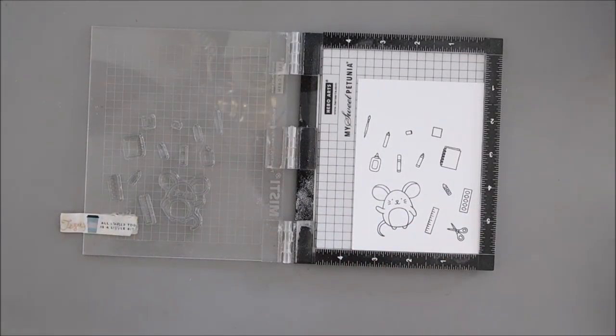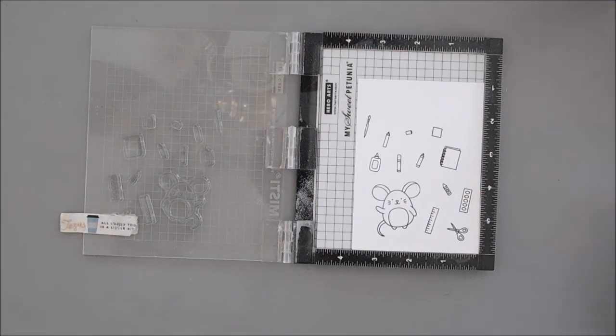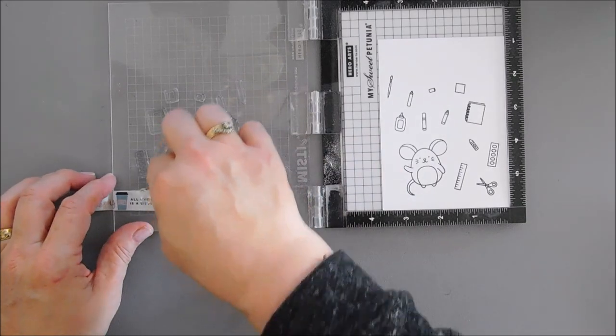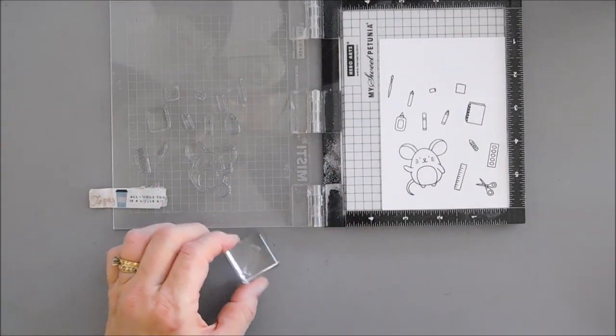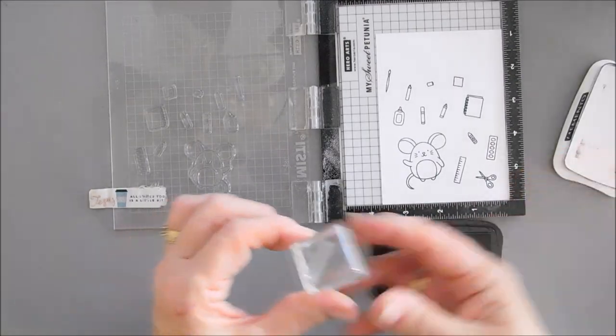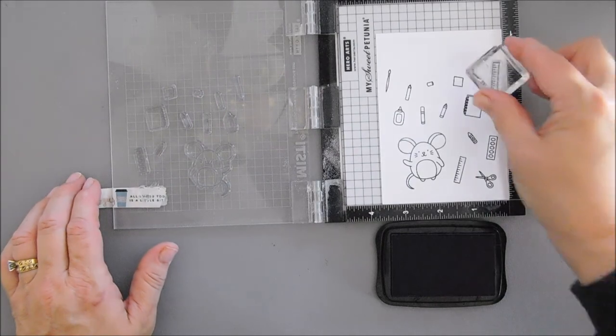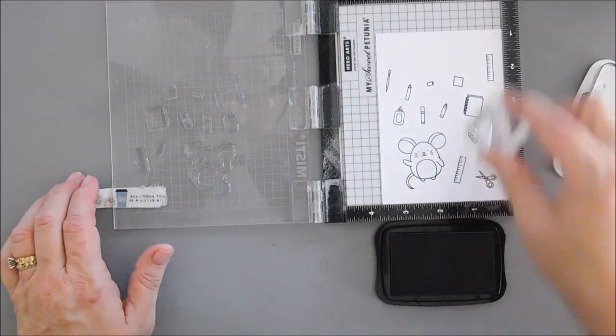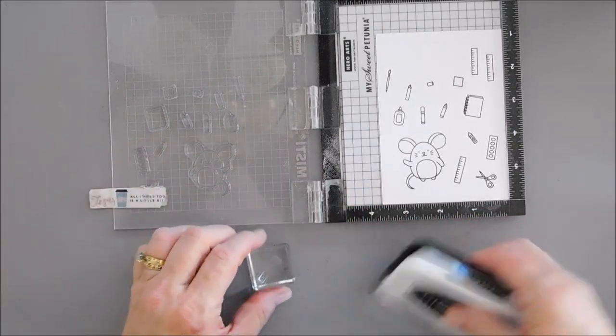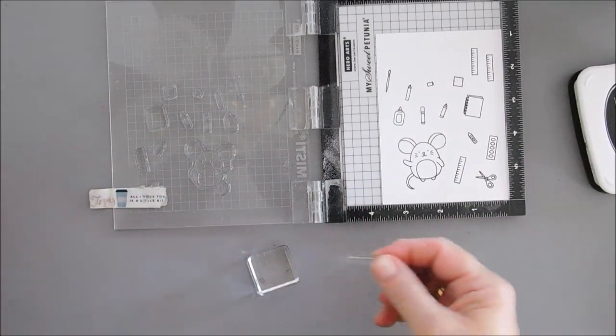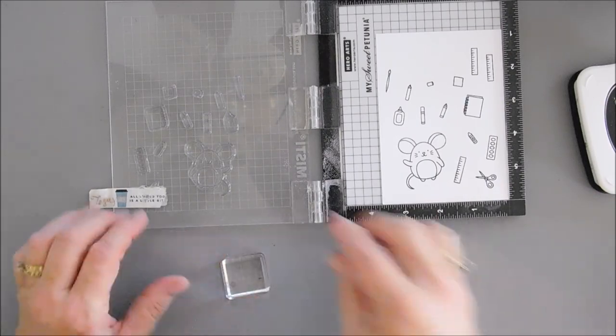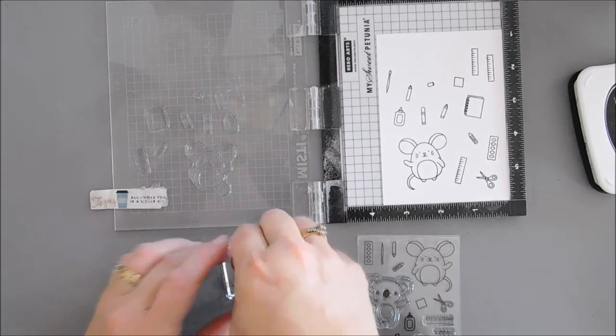And then I'm going to take an acrylic block and we are going to stamp a few more rulers. And then I wonder why my fingers get inky. It's because I don't wipe off my stamps before I pick them up. But we'll stamp a ruler a couple more times.